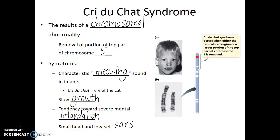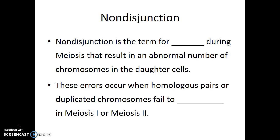What about changes in chromosome number? Nondisjunction is the term for errors during meiosis. These errors can result in an abnormal number of chromosomes in the daughter cells. They occur when homologous pairs or duplicated chromosomes fail to separate in meiosis 1 or meiosis 2.